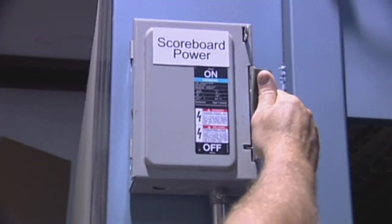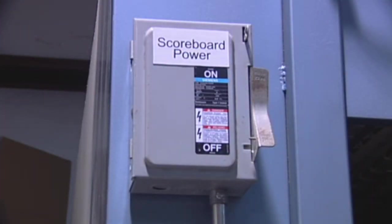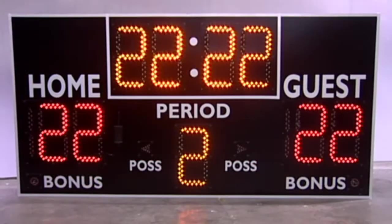Next, turn the power to the scoreboard on. Using your controller, test for the correct operation of the scoreboard, including all digits, horn, and wireless connectivity.